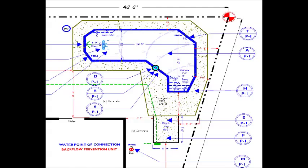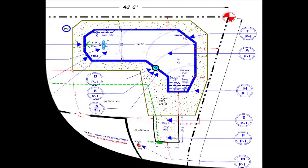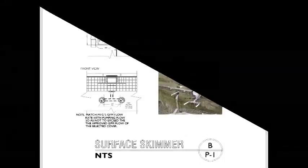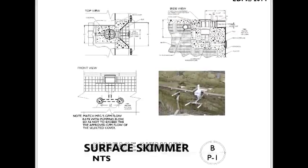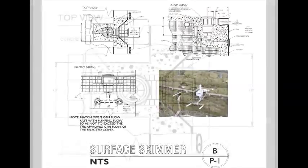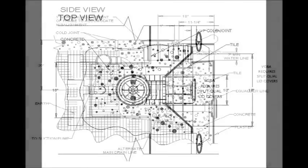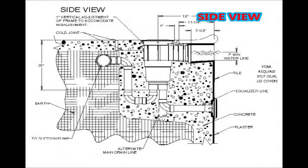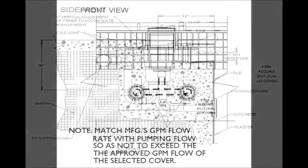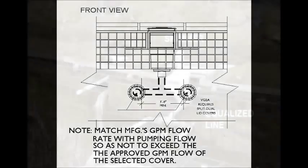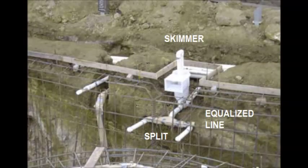Our installation details provide diagrams that will indicate how each of these planned components are to be installed. In this example, we've provided a top view, a side view, a pool wall view, and a photograph of how the installation is to appear before the gunite shell is applied.